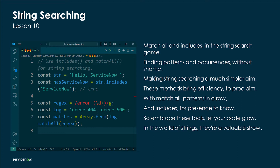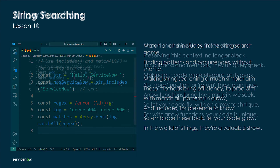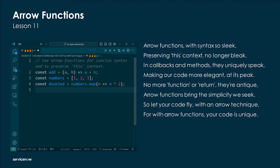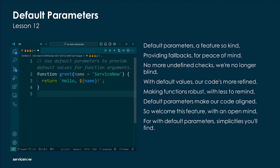Arrow functions with syntax so sleek, preserving 'this' context no longer bleak. In callbacks and methods they uniquely speak, making our code more elegant at its peak. No more function keyword or return antique — arrow functions bring the simplicity we seek. So let your code fly with an arrow technique, for with arrow functions your code is unique.